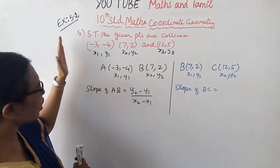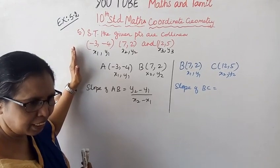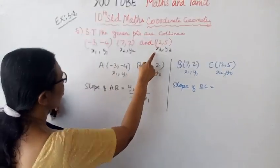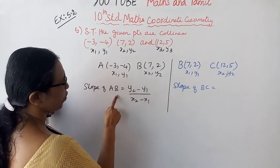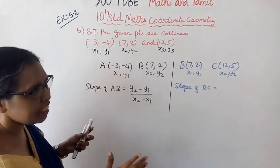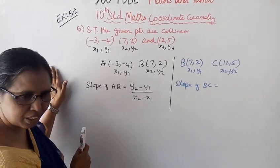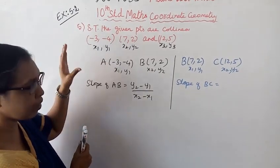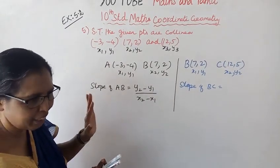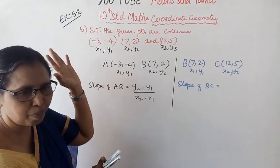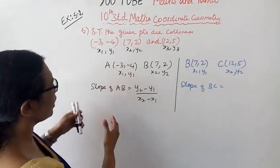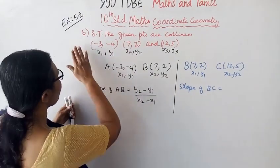To show that the given points are collinear, you can use either the area of a triangle formula or the slope formula. If slope of AB equals slope of BC, then the points are collinear. For this 5.2 exercises problem, we'll use the slope formula.